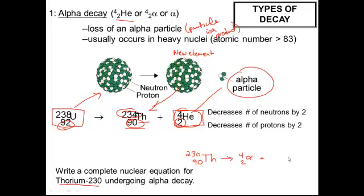So the other product is 226 plus 4 will give us 230, and 88 plus 2 will give us 90, and then we look up 88 and find that it is radium. Be careful not to confuse radium with radon on the periodic table. Radium is number 88, and radon is number 86.